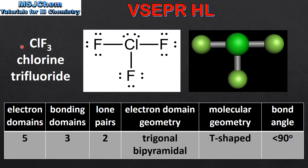Next we have ClF3, which is chlorine trifluoride. By looking at the Lewis structure we can see there are 5 electron domains around the central atom, 3 of which are bonding domains with 2 lone pairs of electrons. The electron domain geometry is trigonal bipyramidal. The molecular geometry is T-shaped and the bond angle is less than 90 degrees.